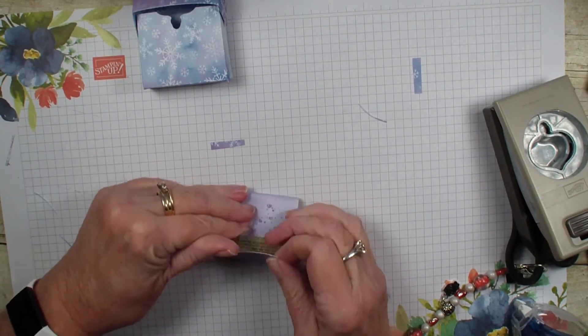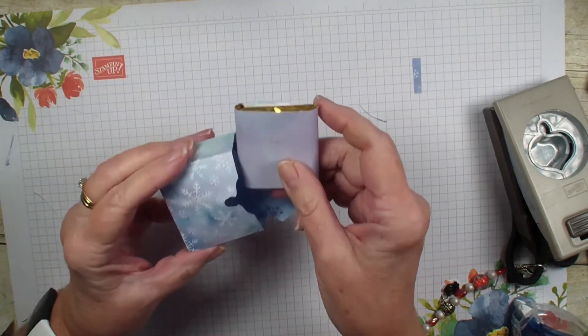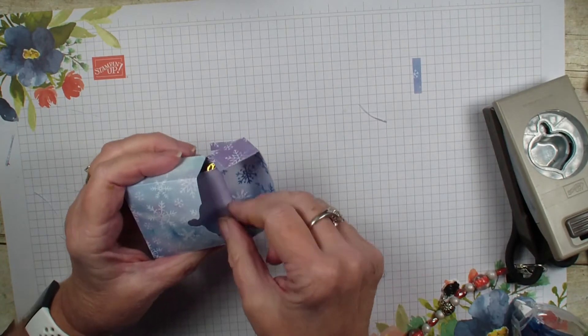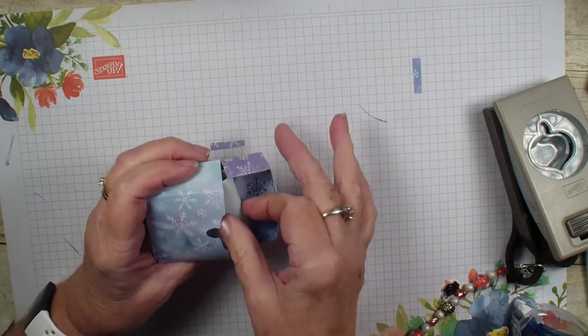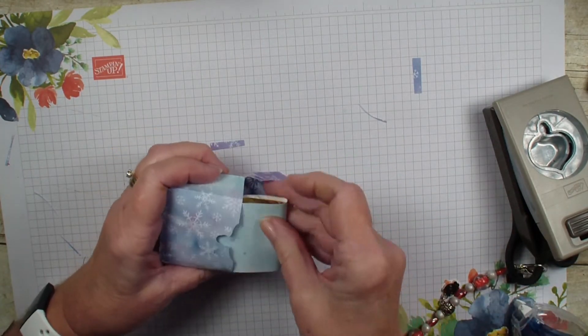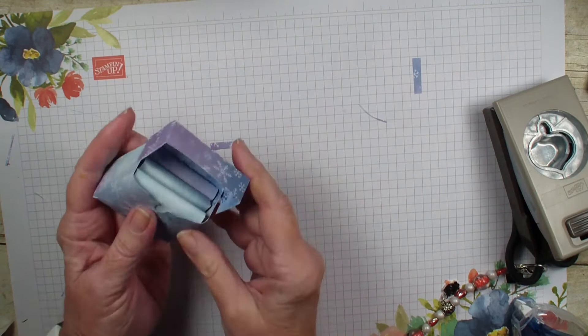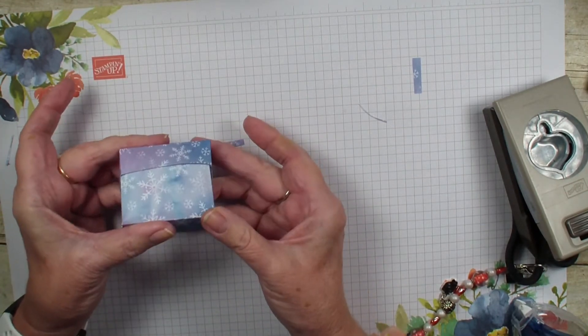Now I have already done two other ones, so this little box holds three Ghirardelli chocolates. We are just going to put them in our box. We need to decorate the front of our box. There is our cute little box, isn't that adorable?